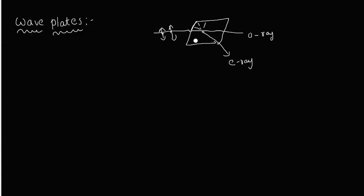The velocity of the ordinary ray is always constant — whether it is traveling along the optic axis direction or in any other direction. That is why the refractive index for the ordinary ray is also constant. But for the extraordinary ray, it travels with different velocities in different directions, and so the corresponding refractive index also varies.